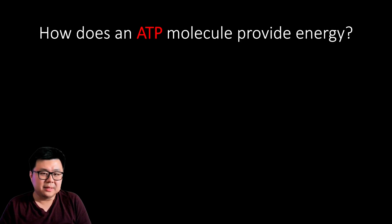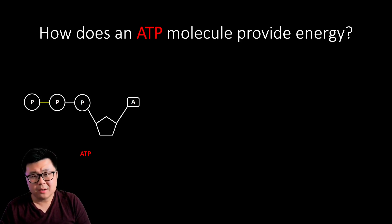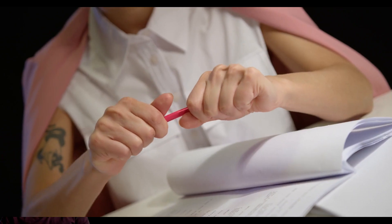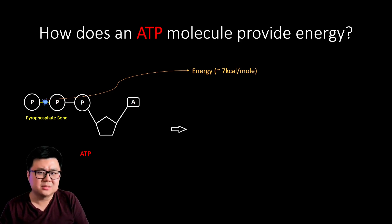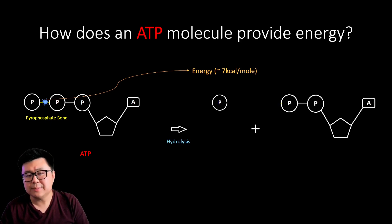Now that we know the structure of ATP, let's talk energy. The bond between the second and third phosphates stores energy, and because of that we call this bond a pyrophosphate bond. When you break that bond, energy is released — that's how we obtain energy from ATP. Once you break that bond through hydrolysis, the ATP molecule becomes a free phosphate and an ADP molecule.